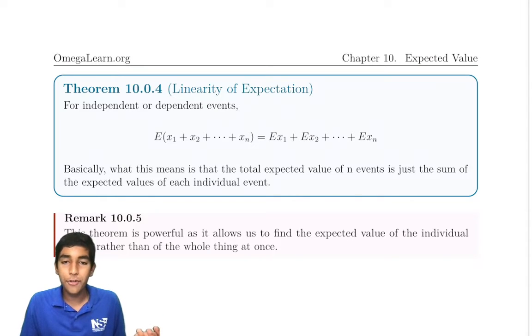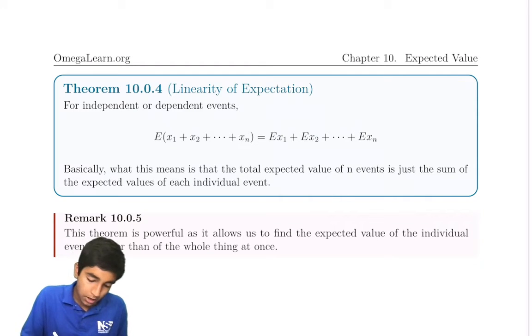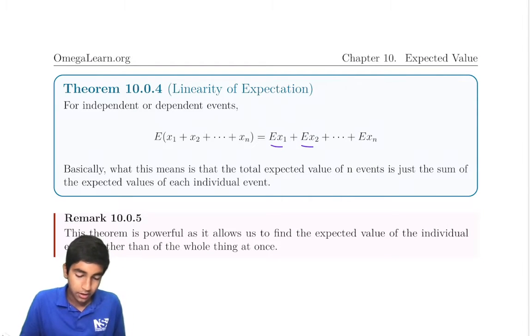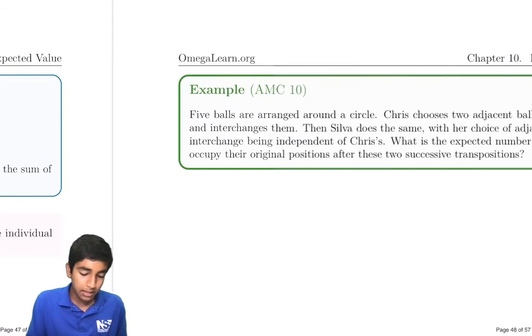So for example, if you're trying to find the expected number of days of rain in a year, you can just find the probability it rains every single day of the year and add them up. Because the probability it rains every single day of the year is just each of these terms. And this will be the total expected value for the total number of days it rains in a year. It's extremely powerful, and we're going to see a simple example of that right here.